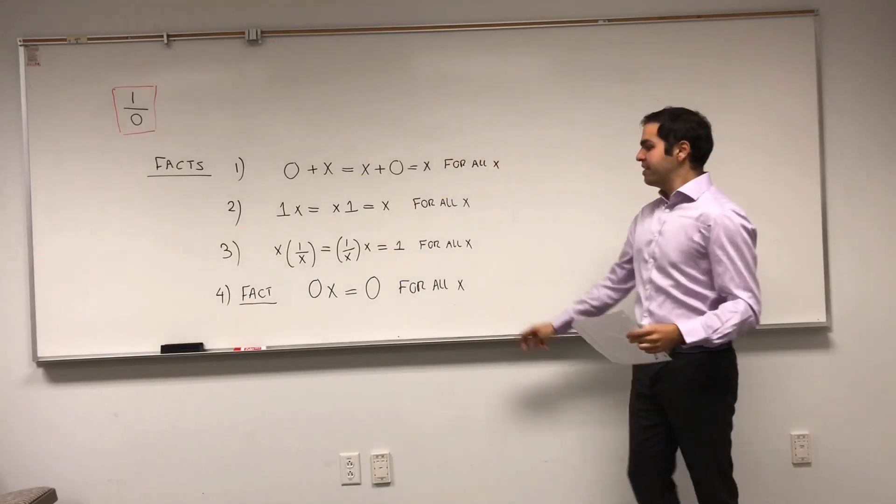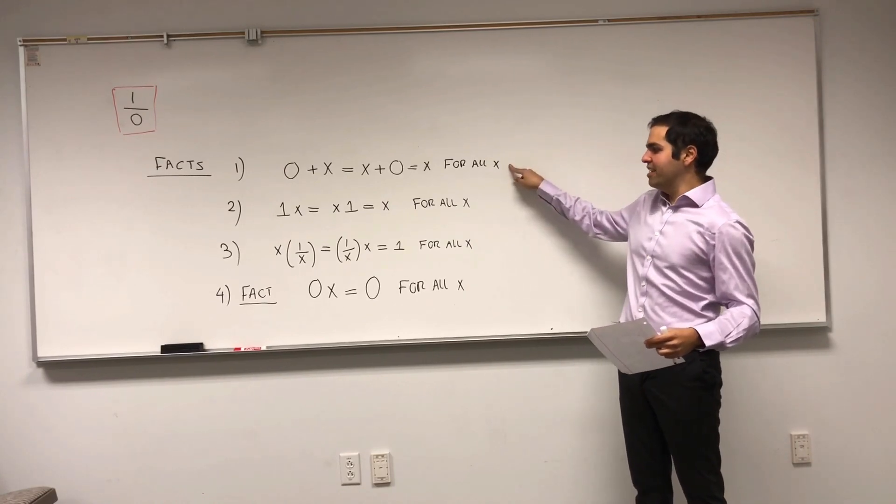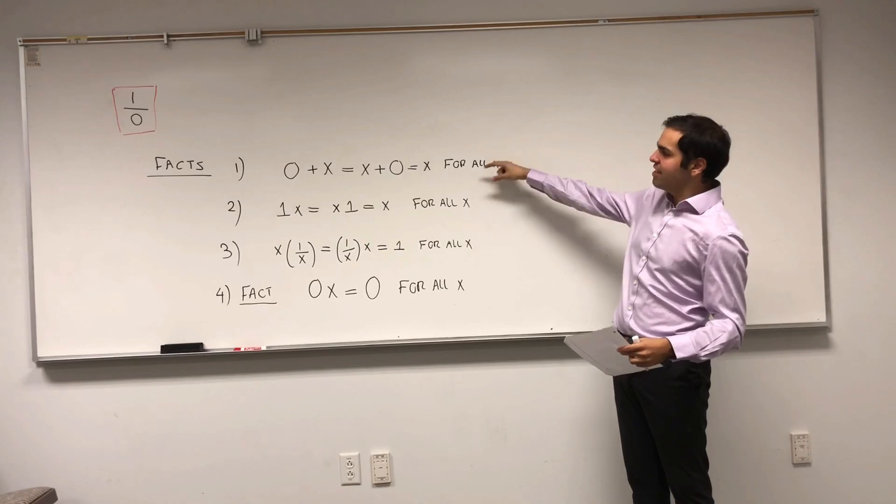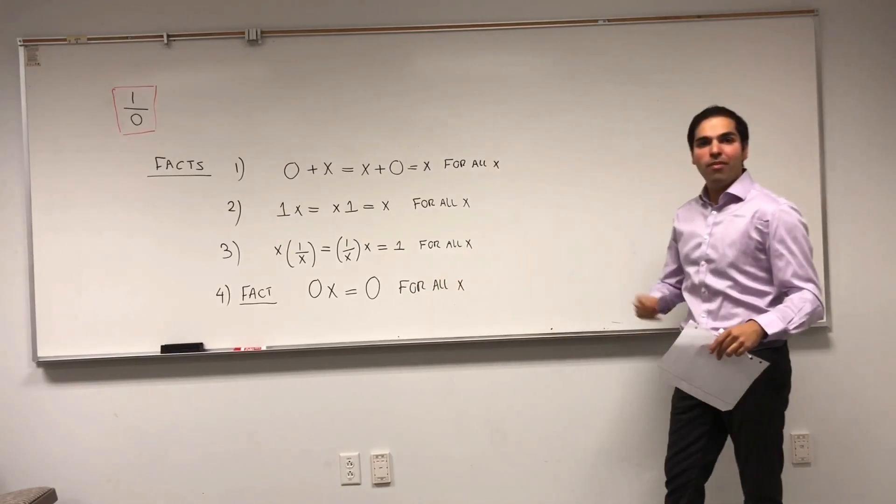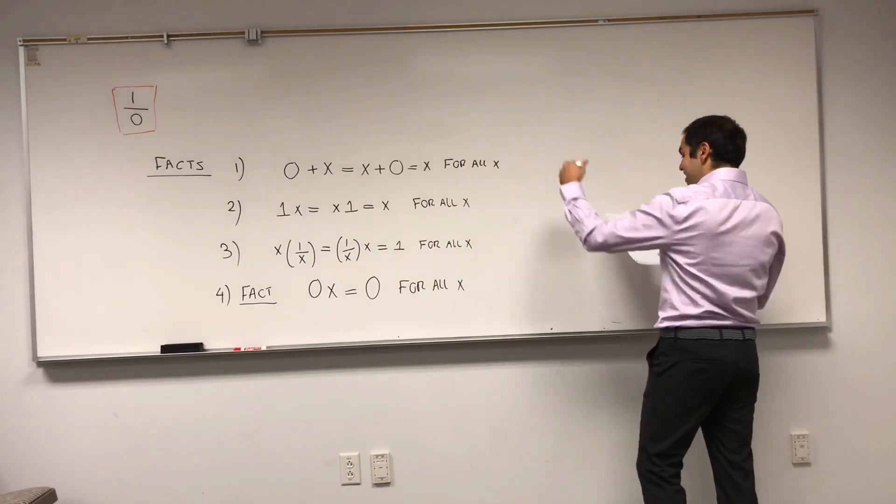And, again, this does not follow from the definition of 0. This is the definition of 0. And, it's sort of interesting because 0 has an additive definition, but here we're talking about multiplying. And, again, I will prove this in the end.